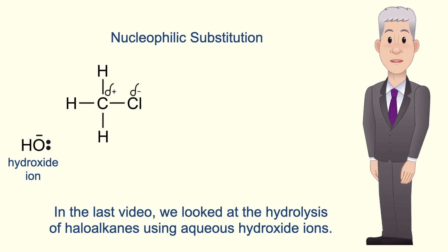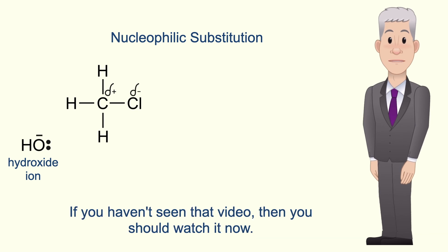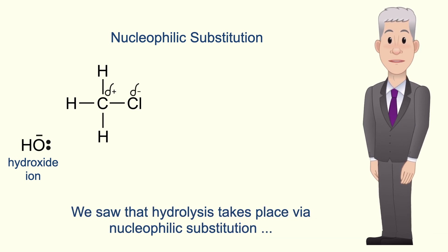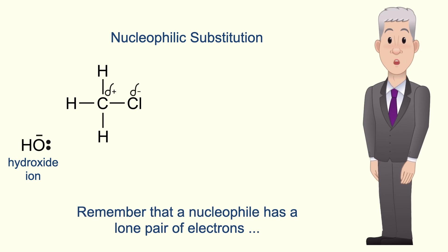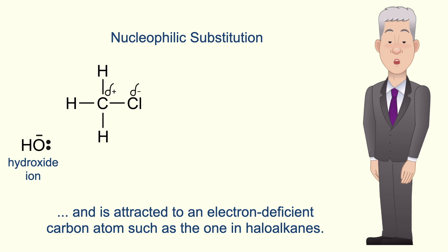In the last video we looked at the hydrolysis of haloalkanes using aqueous hydroxide ions, and if you haven't seen that video then you should watch it now. We saw that hydrolysis takes place via nucleophilic substitution with the hydroxide ion acting as a nucleophile. Remember that a nucleophile has a lone pair of electrons and is attracted to an electron deficient carbon atom such as the one in haloalkanes.